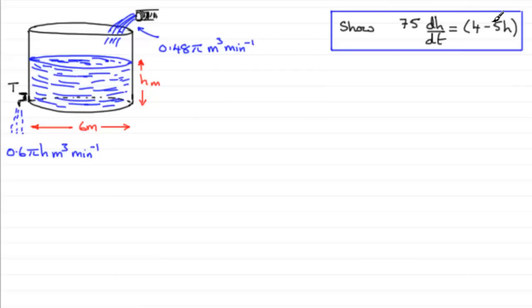So how do we do something like this? Well this is a typical connected rates of change type problem, and if you're unsure of these you can always go on my website and have a look at some of the tutorials. But essentially, what are we given, what kind of rates of change have we got going on here?